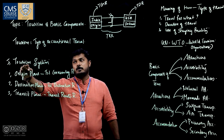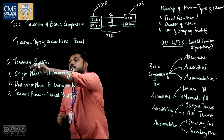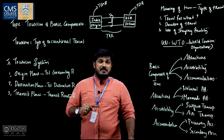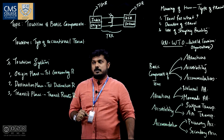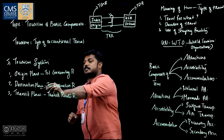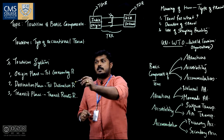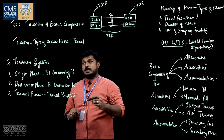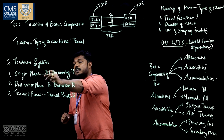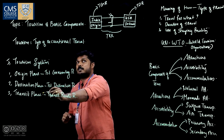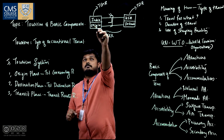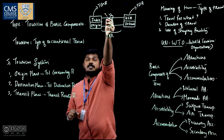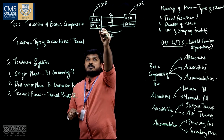The first basic point is the tourism system. In tourism travel, there are mainly three major places: origin place, destination place, and transit place. You can consider this diagram. The origin place is the native place of the tourist, or this is the place where the tourist generates tourism activity.